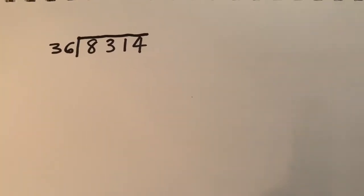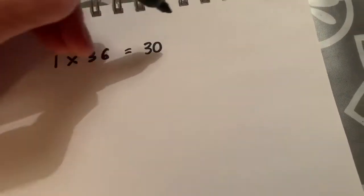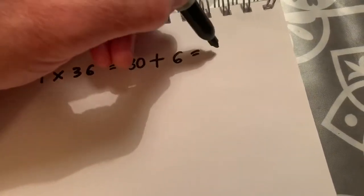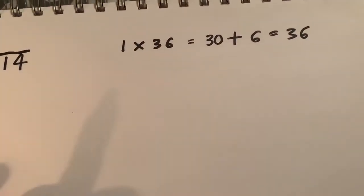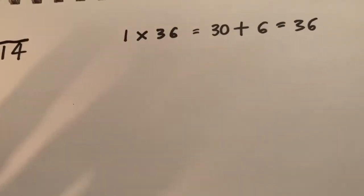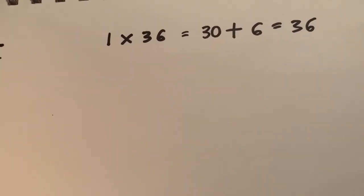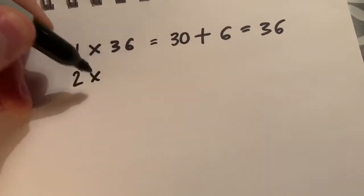First job then, as always, is to create a fact box over here on the right-hand side. So 1 times 36 will partition: 30 plus 6 is 36. Remember what we're doing here with our fact box is we are creating the 36 times table. We're writing out the 36 times table, which of course nobody learns off by heart.